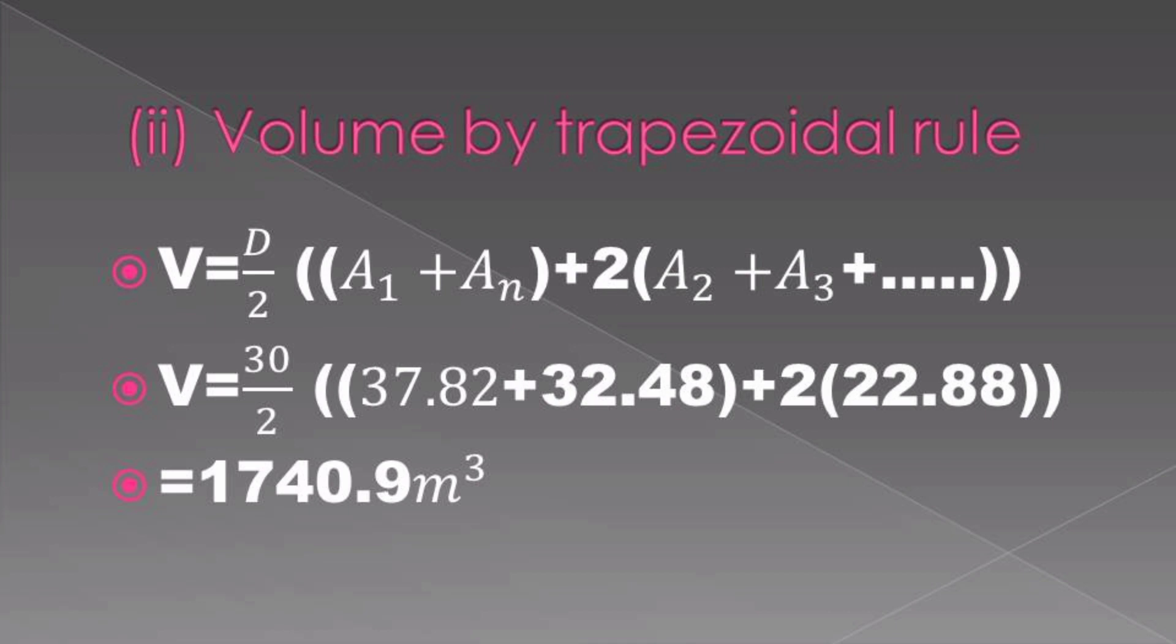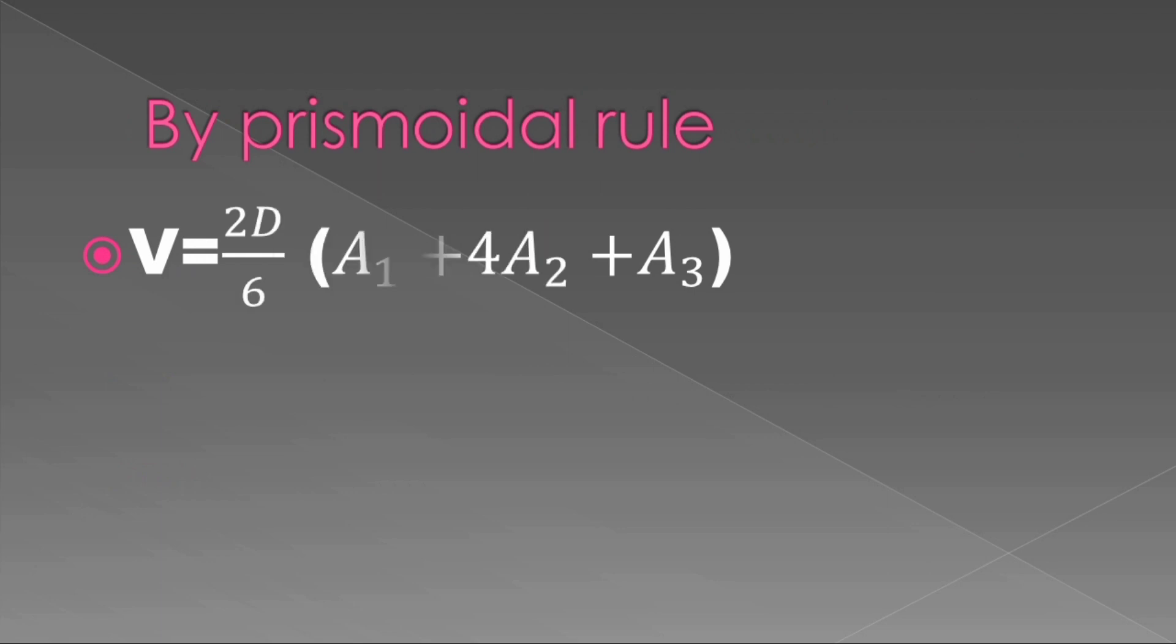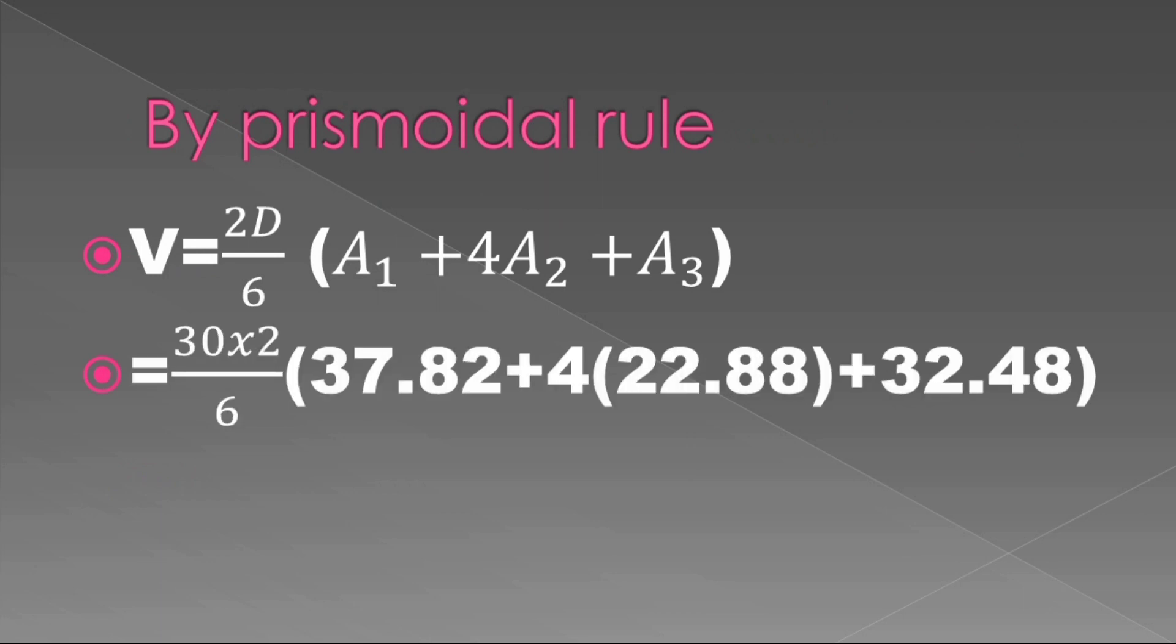Under volume by prismoidal rule, which is a more precise formula, we can see a prismoid is a solid made up of two end faces which must be parallel plane figures.